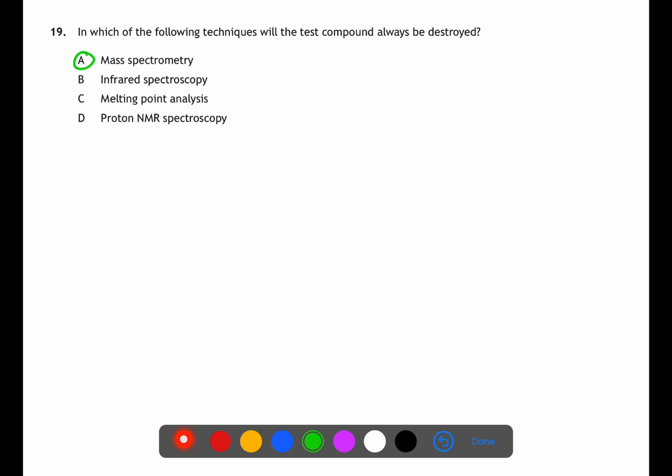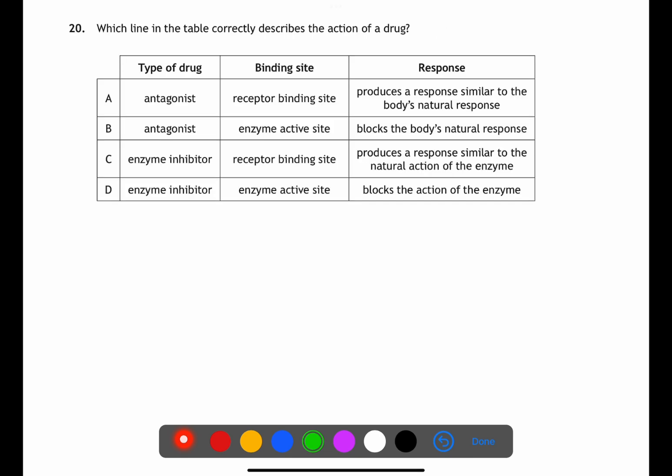Question 20 is looking at pharmaceuticals. An antagonist is a type of drug which will bind to a receptor binding site. However when it does this it will block the body's natural response, not produce the body's natural response. Enzyme inhibitors bind to enzyme active sites and when they do this they block the action of the enzyme.